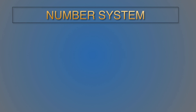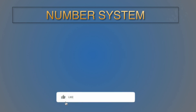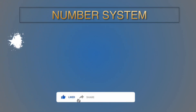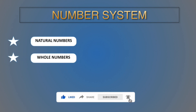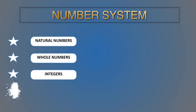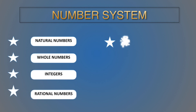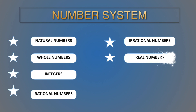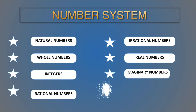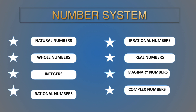In number system we have many number sets. They are natural numbers, whole numbers, integers, rational numbers, irrational numbers, real numbers, imaginary numbers, and complex numbers. Now we will discuss one by one.